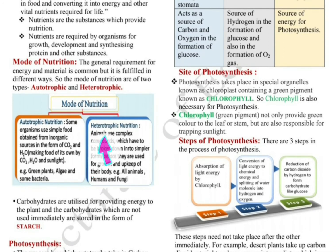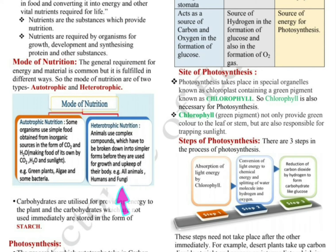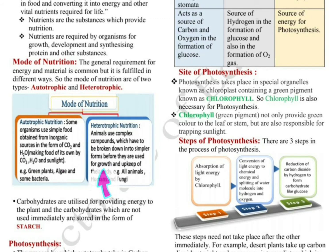The other type is heterotrophic nutrition. Heterotrophic means different — these organisms depend on others for food. Animals use complex compounds which have to be broken down into simpler forms before they are used for growth and upkeep of their body. Examples include all animals, humans and fungi — they depend on autotrophs for nutrients for growth and upkeep.